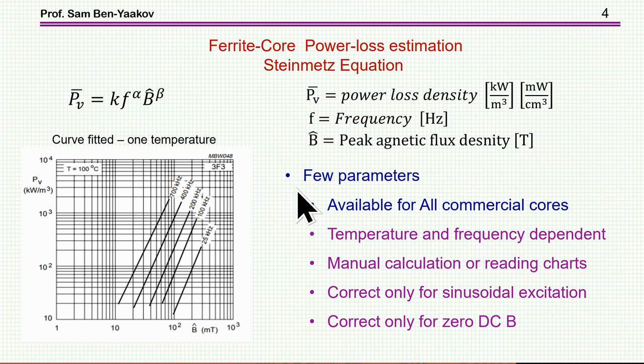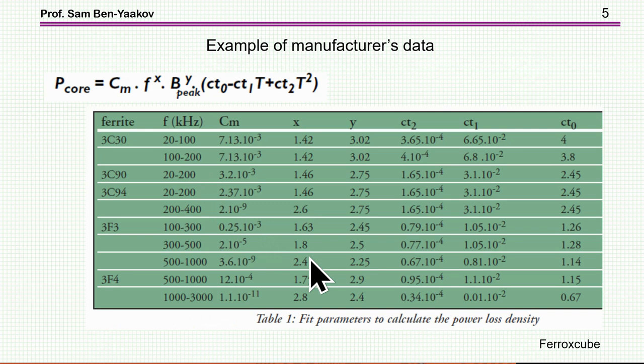So here is an example of some data given by vendors, manufacturers of ferrite material. Here is the template. We have it here. This is the Steinmetz equation. Here there is an extension to temperature effect. So it's another correction here. These are also coefficients and this is temperature. And here we have the ferrite material, different materials. This is the frequency range for which the fitting has been done. Now notice that in some cases, like here, there's a different fitting for the two ranges because one fitting does not cover properly or accurately the full range. And here we have the constant, and x and y is what we call earlier alpha and beta. These are the coefficients for the temperature correction. So this is very typical data that vendors are providing.